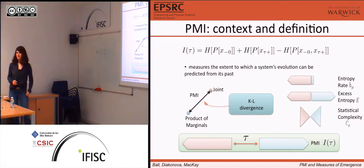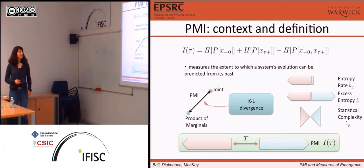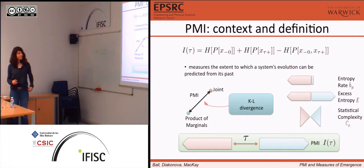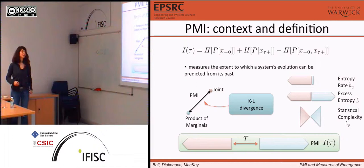We postulate that it's a measure of strong emergence — the extent to which a system's evolution can be predicted from the past. It lies in the context of other primarily computational and mechanical quantities, but it's slightly different. Here we have the past, here we have the future, separated by a time gap. Ideally you take a limit of infinite past and infinite future, and maybe a limit of infinite time gap.